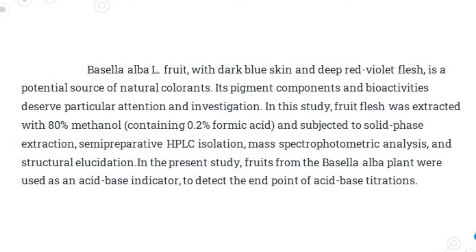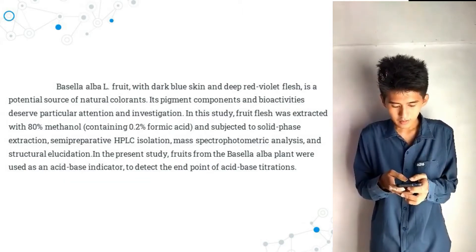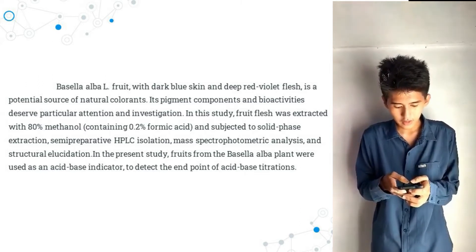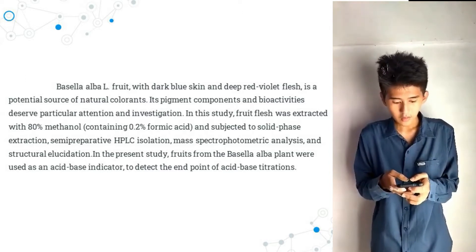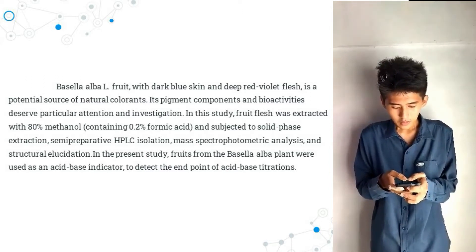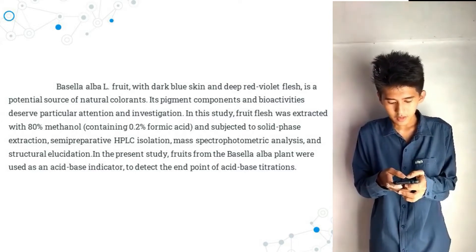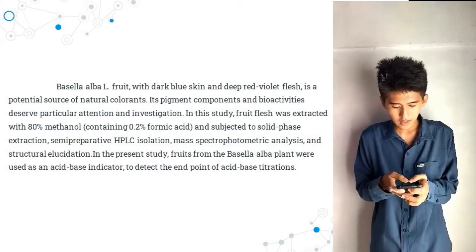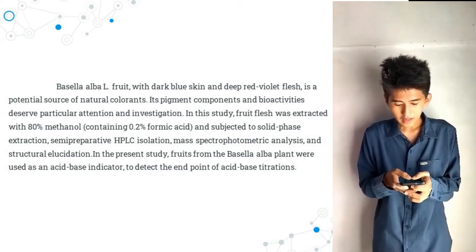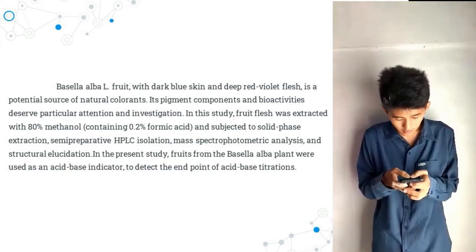It has been found to be a good source of betacyanin, which appears as a reddish-violet pigment. Basella alba L. fruit with dark blue skin and deep red-violet flesh is a potential source of natural colorants. Its pigment components and bio-activities deserve particular attention and investigation. In this study, fruit flesh was extracted with 80% methanol containing 0.2% formic acid, and subjected to solid-phase extraction, semi-preparative HPLC isolation, mass spectrometric analysis and structural elucidation.